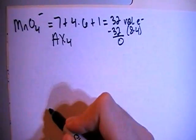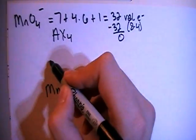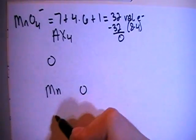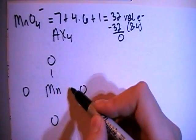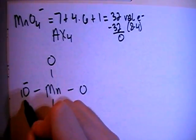So there's a central atom surrounded by 4 peripheral atoms. So let's go ahead and draw this structure out. We've got the manganese in the middle surrounded by the 4 oxygens. And we can go ahead and single bond all of them together and then we can fill in the oxygen's octets.